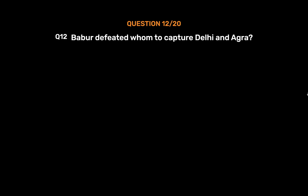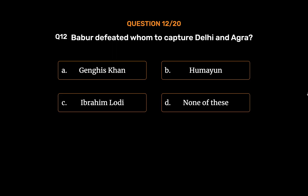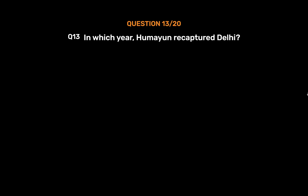Question 12: Babur defeated whom to capture Delhi and Agra? Option A: Genghis Khan. Option B: Humayun. Option C: Ibrahim Lodhi. Option D: None of these. The correct answer is Option C, Ibrahim Lodhi. Babur, the first Mughal emperor, defeated the Sultan of Delhi, Ibrahim Lodhi, at Panipat in 1526 to capture Delhi and Agra. Babur died in 1530 in Agra and was succeeded by his son Humayun.